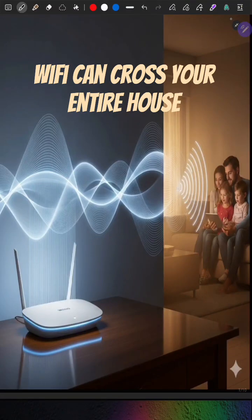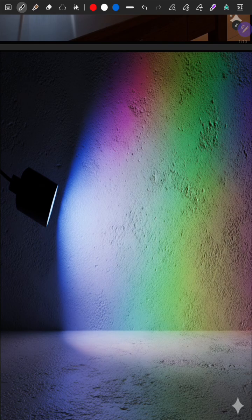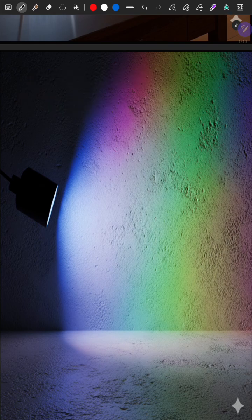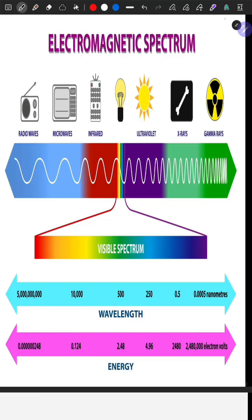Your Wi-Fi can cross your entire house, but a flashlight beam gets blocked instantly. Here is the mind-blowing reason.